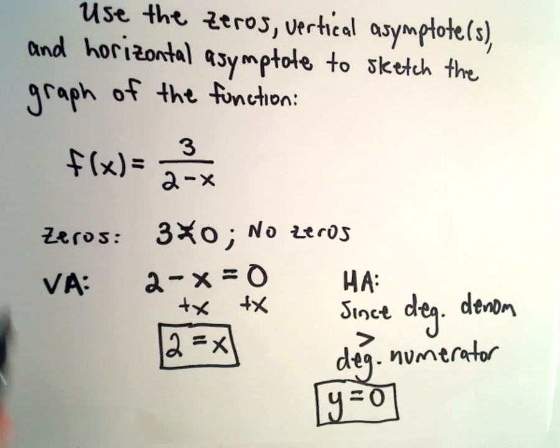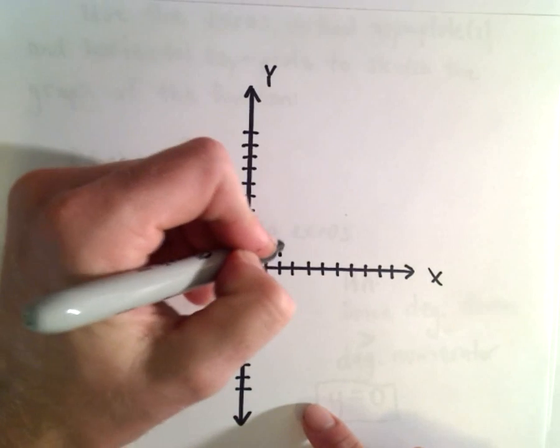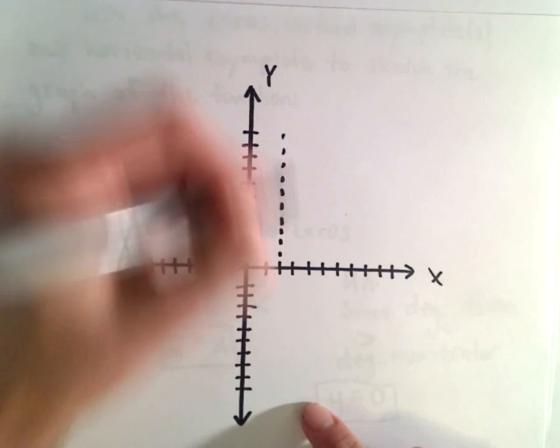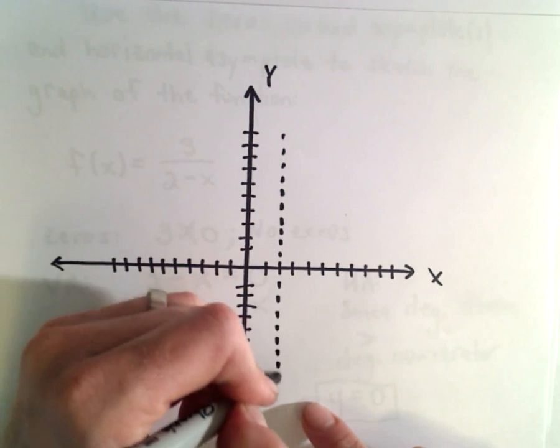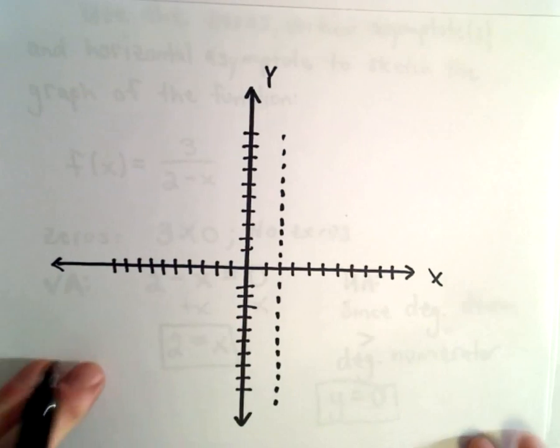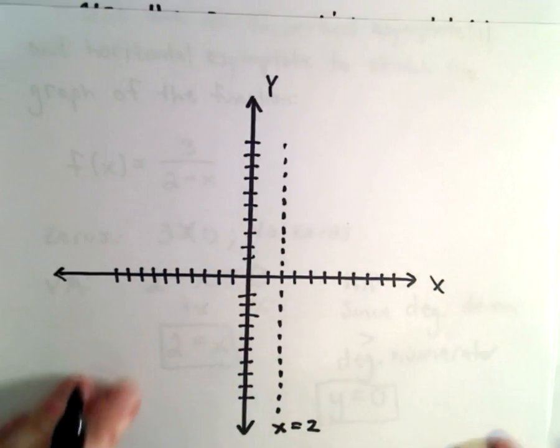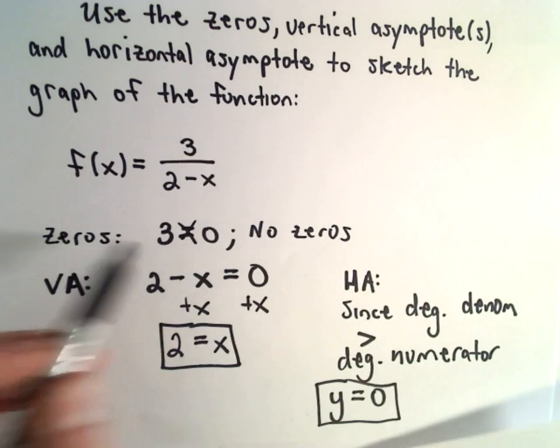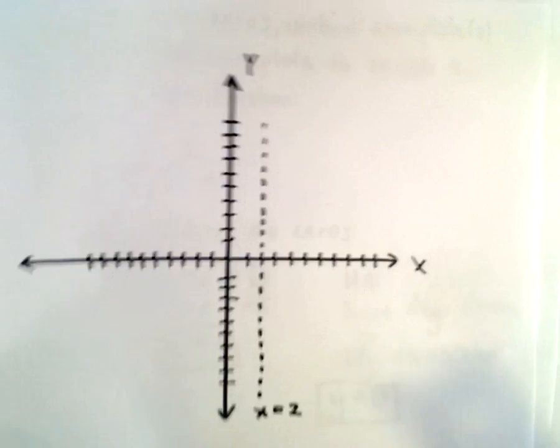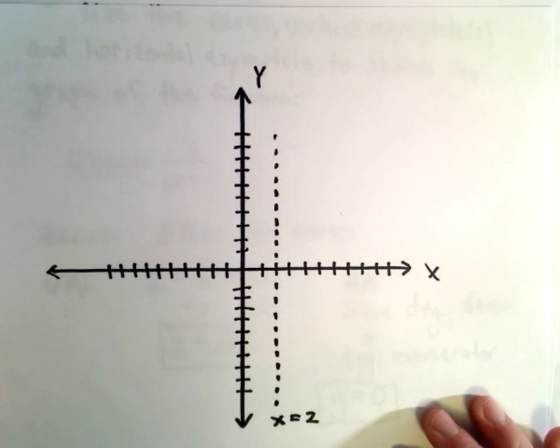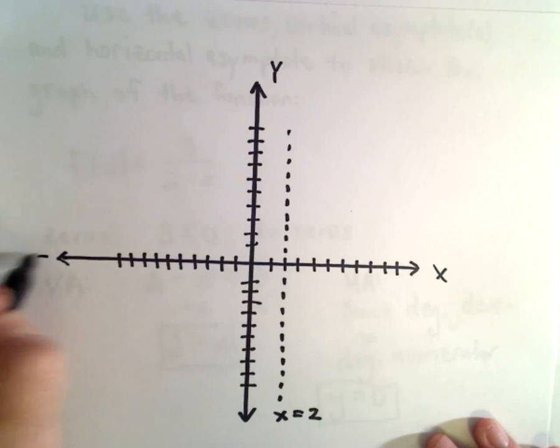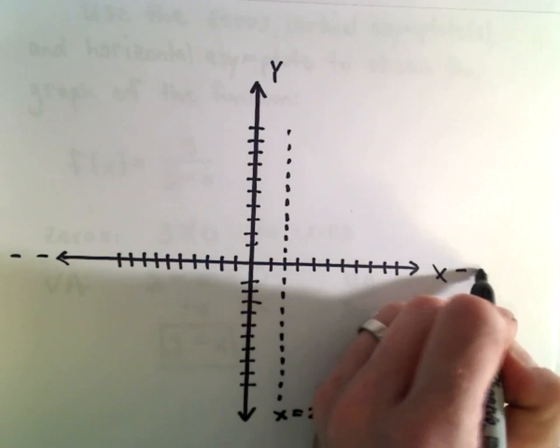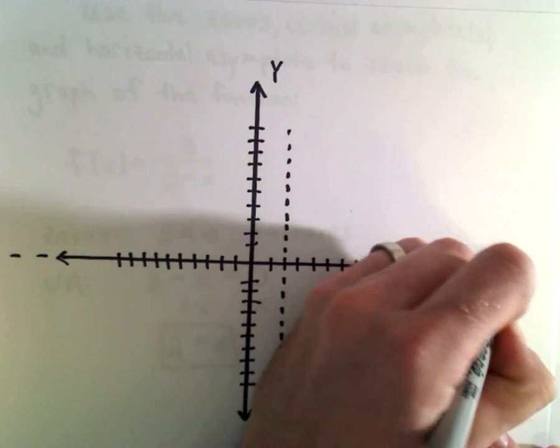So at this point, just based on that, we don't have a ton of information to go on. Let's see, x equals 2 is our vertical asymptote, so let me put that in there. We said there are no zeros. y equals 0 or the x-axis is going to be our horizontal asymptote.